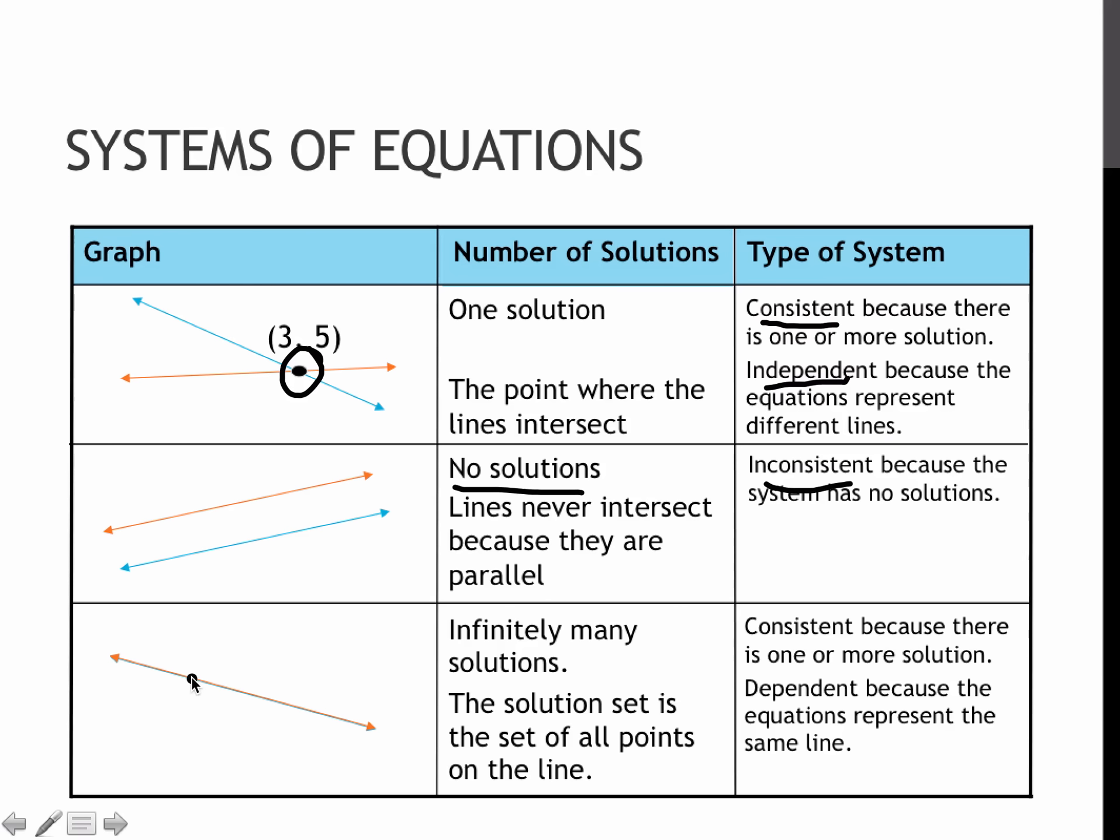Our last option is that we have the same line twice that is basically drawn on top of each other. So it's the same line two times. That has infinitely many solutions because all of the solutions are the points on this line. So every time we have a point on this line, that is a solution. And there are an infinite amount of those because the line goes on forever. This is also consistent because there is a solution, but it's dependent because they're the same line.